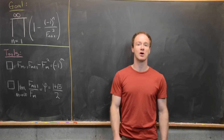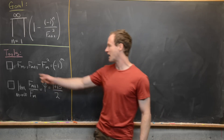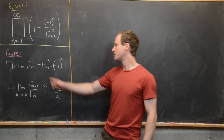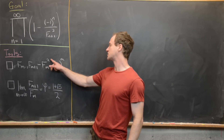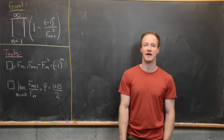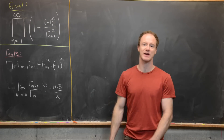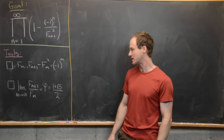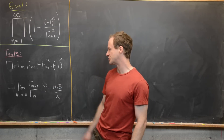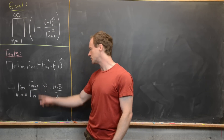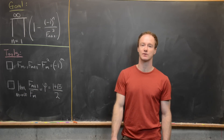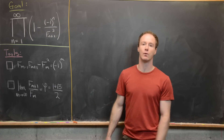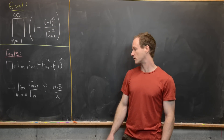The first tool is Cassini's identity: F_{m-1} times F_{m+1} minus F_m squared equals negative 1 to the m. The second tool is that the limit of the ratio of consecutive Fibonacci numbers equals the golden ratio — that is, the limit as m goes to infinity of F_{m+1} divided by F_m is phi, which equals (1 plus the square root of 5) over 2.